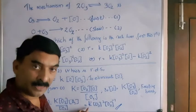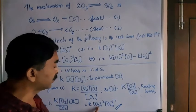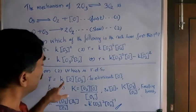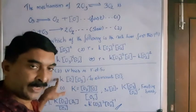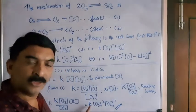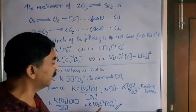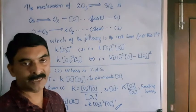So the final rate equation is equal to K dash. Here, since we started with K, we used K dash. Instead, if we start with K dash, we can write this as K. So we can accept the final rate law as K into O3 square into O2 to the power minus 1. That is the final rate law.